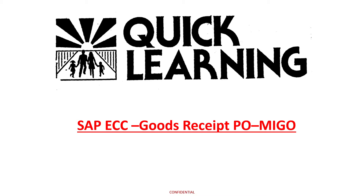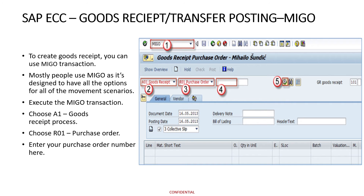Welcome to Quick Learning. Today we are going to learn how to use the MIGO command in SAP, which is used to create goods received for any purchase order, or if we have to perform any material transfer from one storage location to another storage location. Most people use MIGO because it has all the options for any type of movement scenarios.